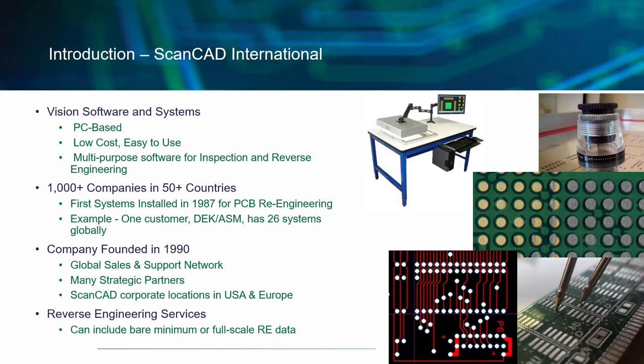First off, a quick introduction. We are a 30-year-old software company rooted in the electronics industry. Originally, we started in the inspection and measurement environment, as well as programming component locations for pick-and-place machines. But today, our software has become a versatile tool capable of everything from complete PCB reverse engineering to automated inspection options. Since the company was founded in 1990, we have continued to grow our global sales and support network. We currently have our systems installed at over 1,000 companies across 50 countries. Along with our growth, we transitioned from simply creating software to offering reverse engineering as a service.